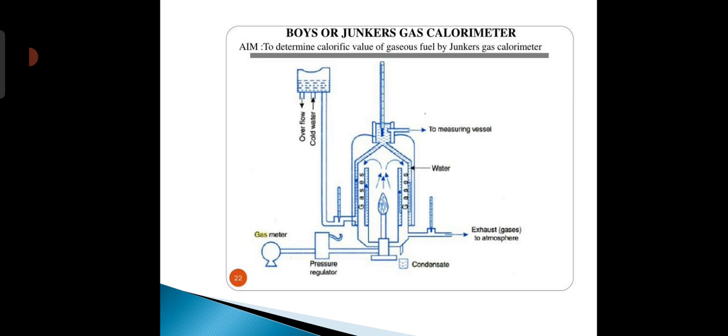See the first diagram of this Boys gas calorimeter. In this calorimeter there are two thermometers. First is T1 that determines the temperature of incoming water, and second thermometer T2 that determines the temperature of outgoing water. Next is the pressure regulator, condenser, exhaust gases, and the gas meter.